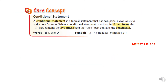We're going to start with conditional statements. They are logical statements. They have two parts: the hypothesis and the conclusion. When a conditional statement is written in the if-then form, the if part becomes the hypothesis and the then part becomes the conclusion. If you remember these symbols — if P then Q, or P implies Q — that will help you remember when we learn about converses.